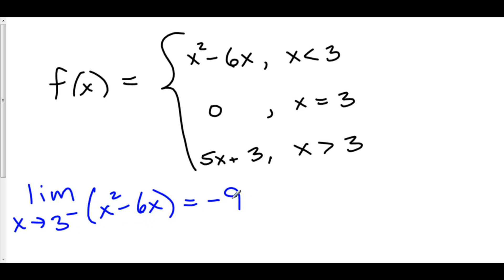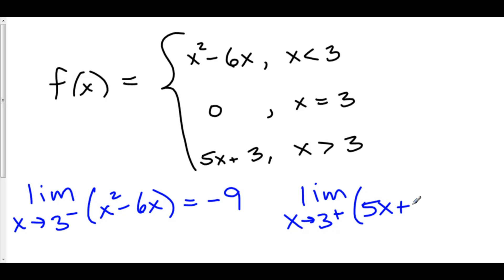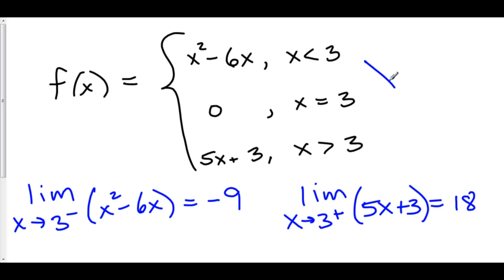Now let's check the right-hand limit. Approaching from the right, x is bigger than 3, so we use 5x plus 3. Plugging in: 5 times 3 is 15, plus 3 is 18. The limit doesn't exist since negative 9 does not equal 18. Furthermore, the function value at x equals 3 is 0. Just the fact that the limit doesn't exist means this function is not continuous at x equals 3.